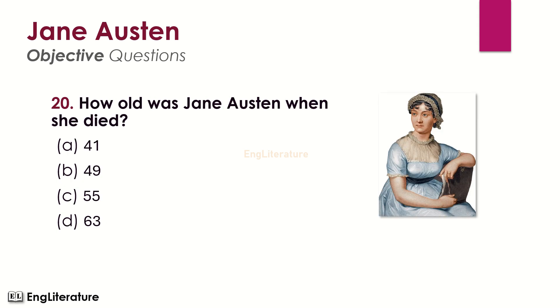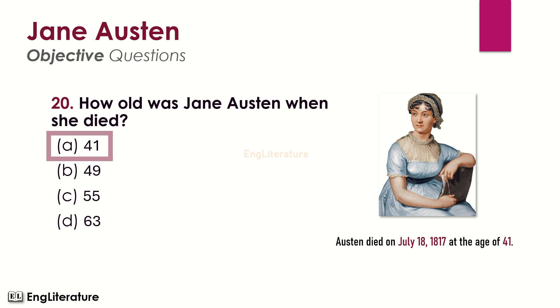How old was Jane Austen when she died? Austen died on July 18, 1817 at the age of 41. The right choice is number A — Jane Austen died at the age of 41.